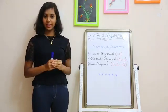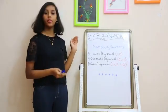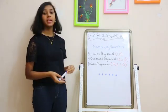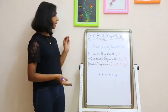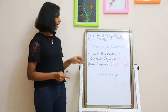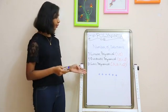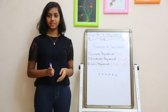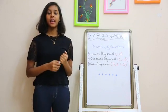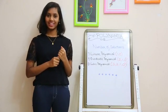Since we have completed the graphical representation of polynomials, the last topic is number of solutions. A linear polynomial has one solution, a quadratic polynomial has two solutions, and a cubic polynomial has three solutions. I hope you all enjoyed and understood today's class. Thank you and have a nice day.